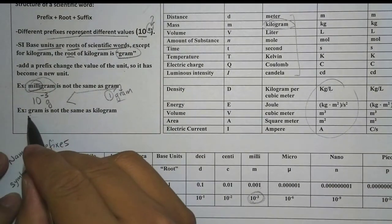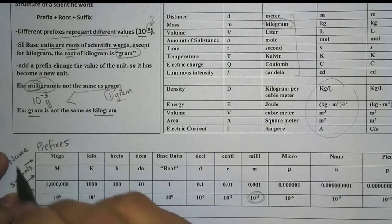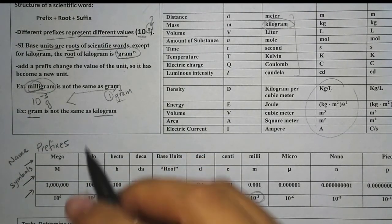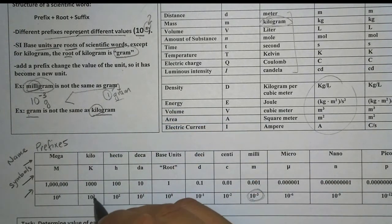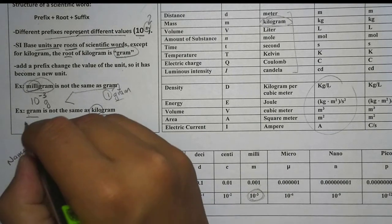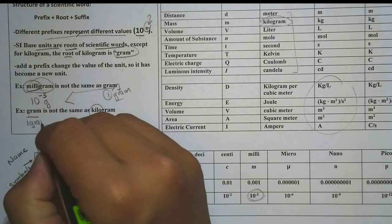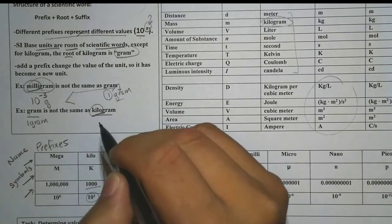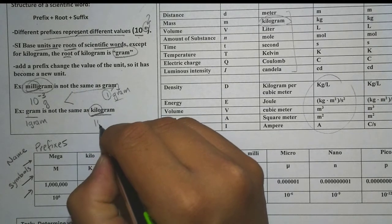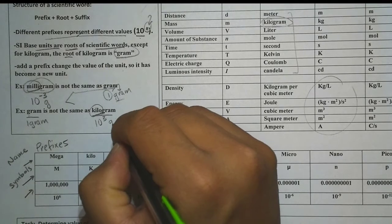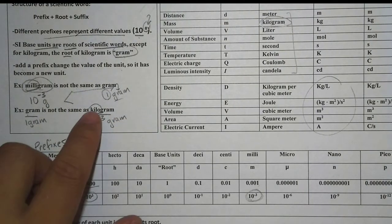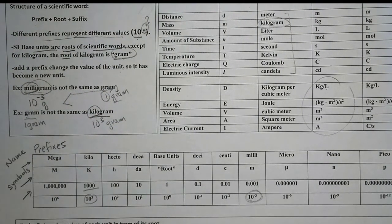Even though we have grams and kilograms, they are completely different units. The prefix kilo represents 10 to the third, which is 1,000. So we have one gram, which is a gram itself, but kilogram is actually 1,000 grams, or 10 to the third grams. As you can see, the units represent different values, and therefore they are completely two different units.